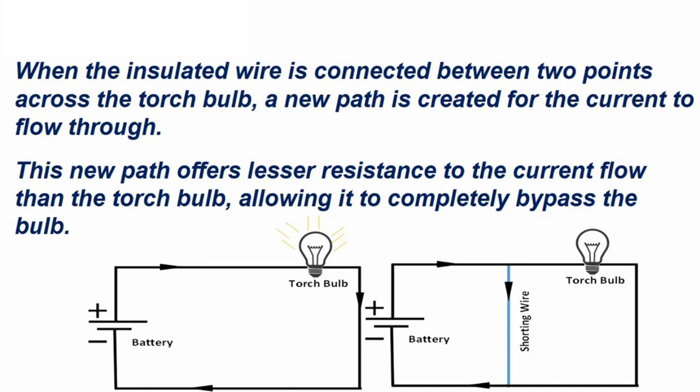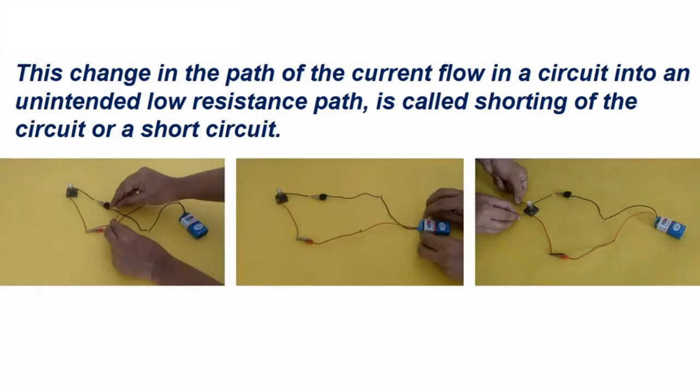Look here. In the diagram also, it is shown. This change in the path of the current flow in a circuit into an unintended low resistance path is called shorting of the circuit or a short circuit. Thank you.